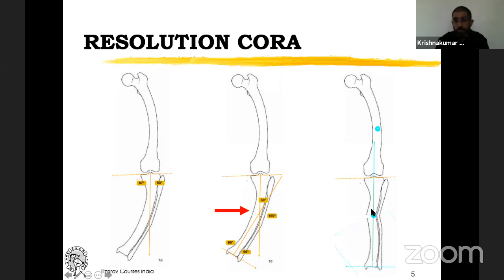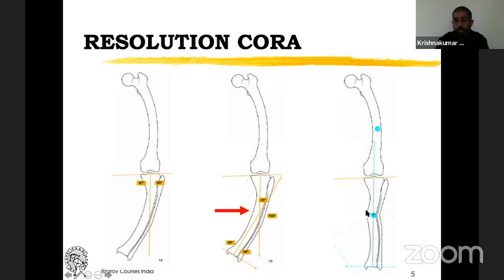If I do a single osteotomy keeping this as the apex — the resolution cora — the axis is aligned but there is a bump on the medial side. This is anatomically not very good even though mechanically it is fully corrected, and it may create problems. Moreover, if you want to put a nail through this, it is a little bit difficult because you have to negotiate through proximal as well as distal fragments which are in themselves bent. If using an external fixator it is fine, but if planning to use a nail, you have to be more careful.